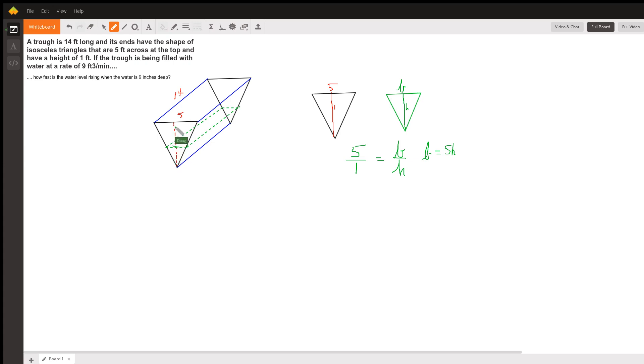a height that is one and this length is 14 feet and we're told that the water is filling up at a rate of nine cubic feet per minute and we want to know how fast is the water level rising when the water is nine inches deep. Okay,